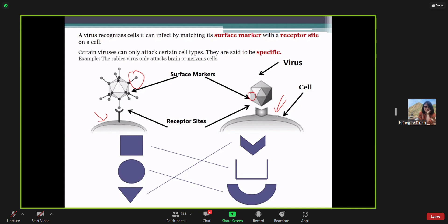For example, rabies only attacks the brain or nervous cells. Some coronavirus attack our lung cells. The HIV attacks our CD4 cells, the immune cells. So it's very specific. How can the virus design and replicate inside our bodies?